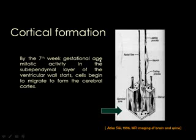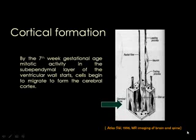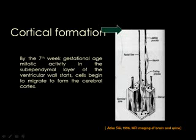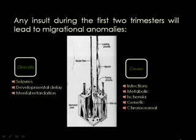By the seventh week of gestational age, there is mitotic activity of the subependymal layer in the wall of the ventricle. These cells start to migrate along radial fibers to form the cerebral cortex. This migration can be stopped at any phase — early, during migration, or at the final stage — and any lesion disturbing this migration results in neuronal migration disorders.